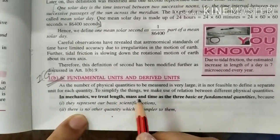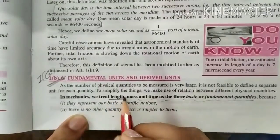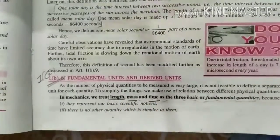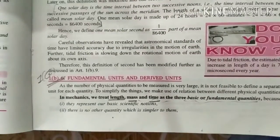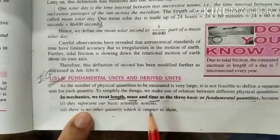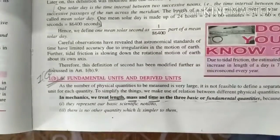In mechanics, we treat length, mass and time as three basic or fundamental quantities. Basically length, mass and time, all other quantities depend on these. Why do we do this? Because they represent their basic scientific notation, they help us with the basics.